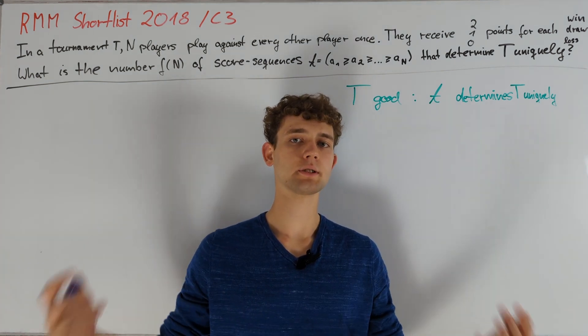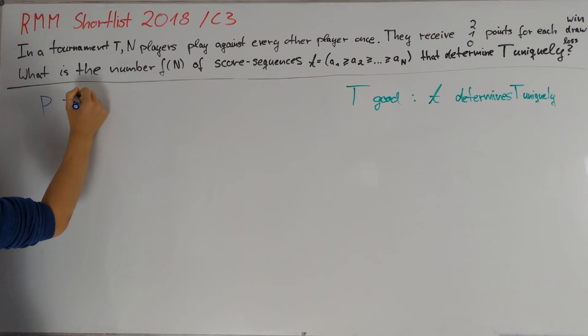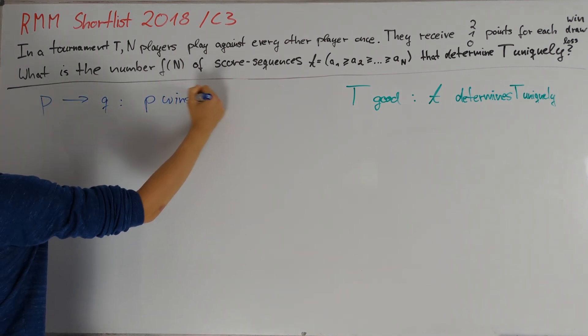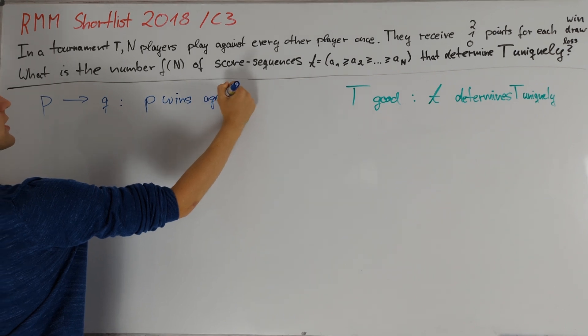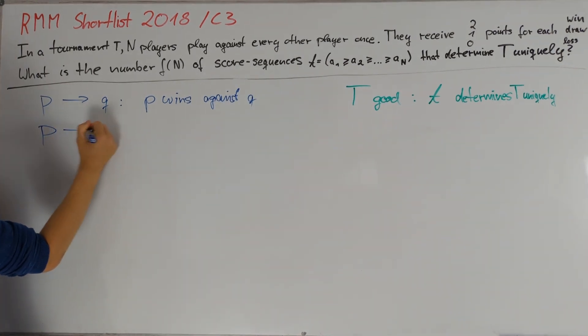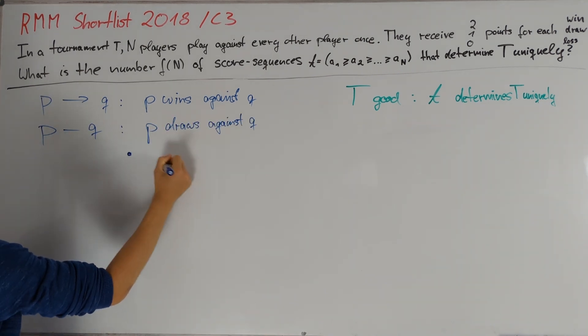In order to write this down, let's introduce some notation. We will write P wins against Q in this way, and moreover if P and Q draw, then we write P draws Q like this.